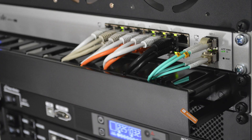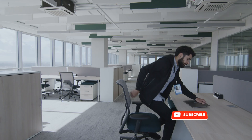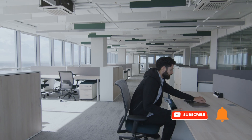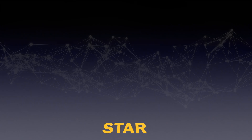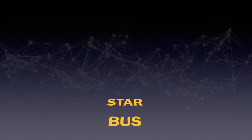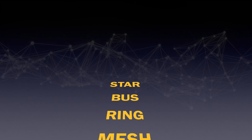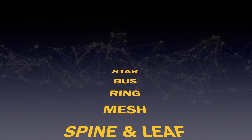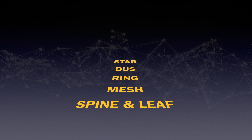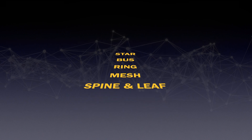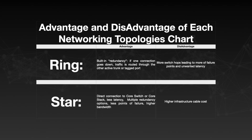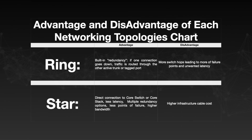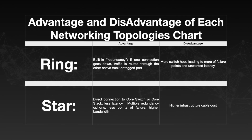An AV commissioning engineer should be familiar with different types of network topologies such as star, bus, ring, mesh, and spine and leaf, to understand the advantages and disadvantages of each.